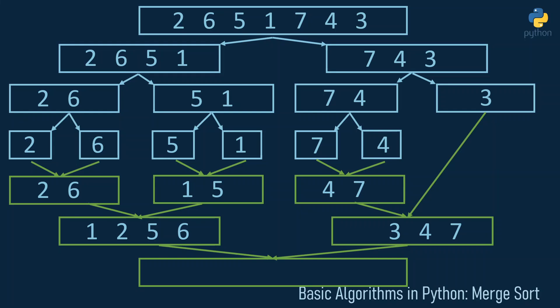Now we have one last merging step to finish the algorithm. We compare one and three, store one; compare two and three, store two; compare five and three, store three; compare five and four, store four; compare five and seven, store five; compare six and seven, store six. This just leaves seven, which is transferred to the new array.